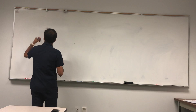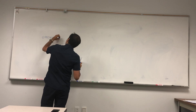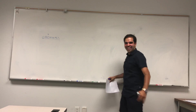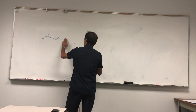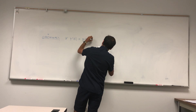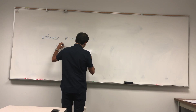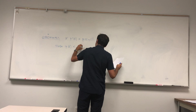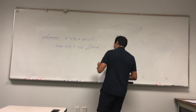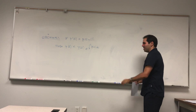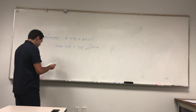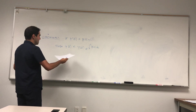Gronwall's inequality — it sounds like some Nordic viking monster. So: if y'(t) ≤ g(t)·y(t), then y(t) ≤ y(0)·e^(∫₀ᵗ g(s) ds). This is not in vain — I'll give you a really cool application after the proof. Let me prove this now, and it just has to do with a helper function.